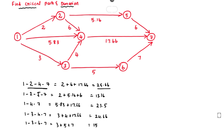So this is the critical path and this is the critical duration. We can draw a double line on it: 1→2, then 2→4, then 4→7. This is the critical path. In the critical path there is no float.